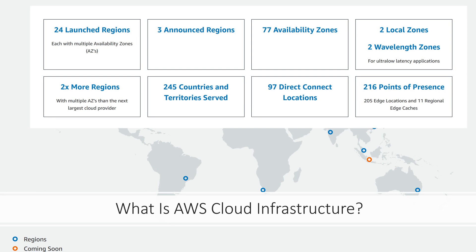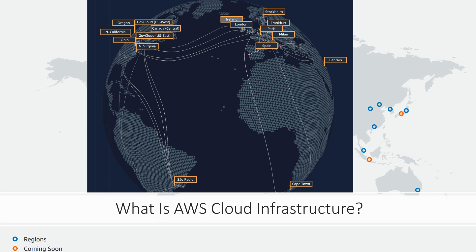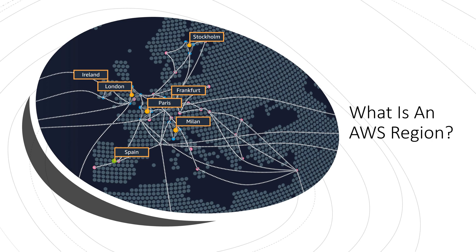AWS has announced plans for nine more availability zones and three more AWS regions in Indonesia, Japan, and Spain. Whether you need to deploy your application workloads across the globe in a single click, or you want to build and deploy specific applications closer to your end users with single-digit millisecond latency, AWS provides you the cloud infrastructure where and when you need it.